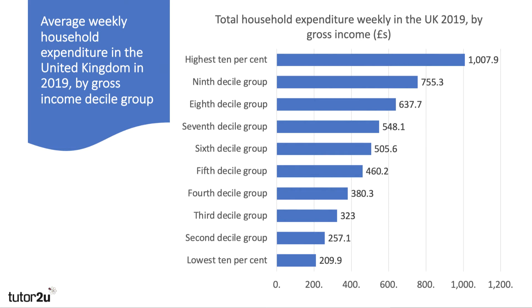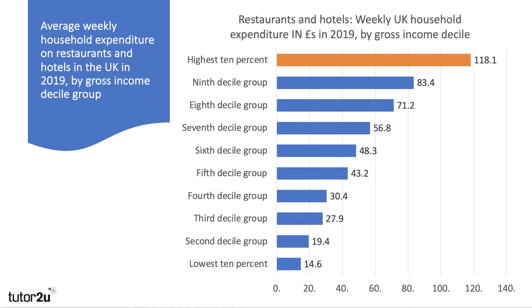What I've done here is taken UK households arranged by income decile group. The highest 10% — the richest — spend just over £1,000 a week on average. As we go down the decile groups to the relatively poorer households, spending falls in each category. The poorest 10% of households spend just over £200 a week, so there's quite a big discrepancy. For restaurants and hotels, you see a strong income-spending relationship — particularly in the 8th, 9th, and 10th deciles, where spending goes up quite rapidly, suggesting a strong income elasticity of demand.